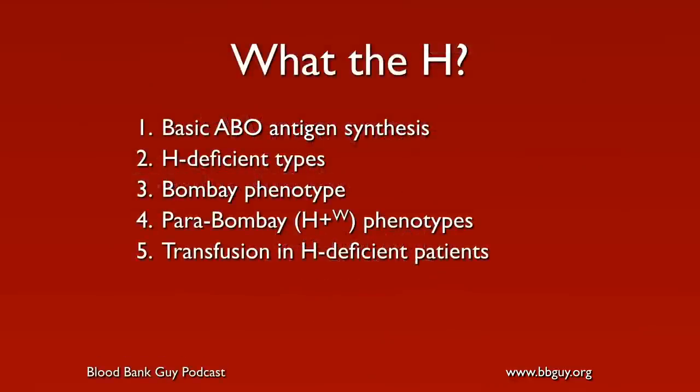Here's what we're going to do: we'll describe basic ABO antigen synthesis, spending about 10 minutes going over the very basics of the ABO blood group system. Then we'll describe the H-deficient types, and move into the Bombay phenotype specifically, the Parabombay phenotypes, and finally what do we do with these patients when we have one of them — how do we transfuse them? If you're really familiar with ABO basics, you can skip ahead about 10 minutes or so.